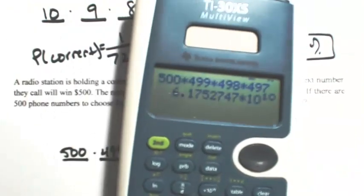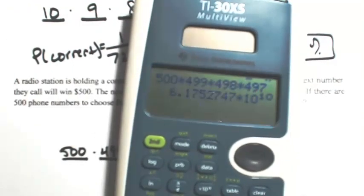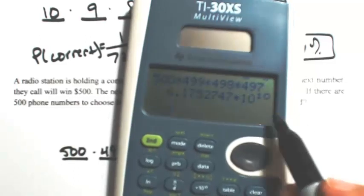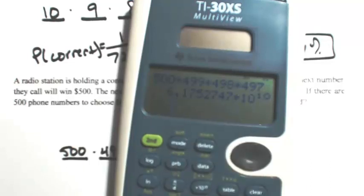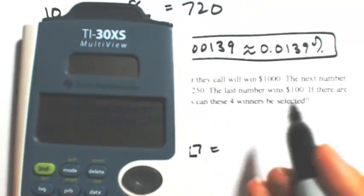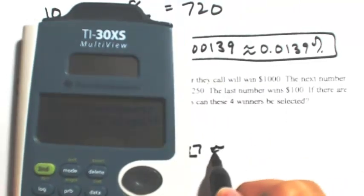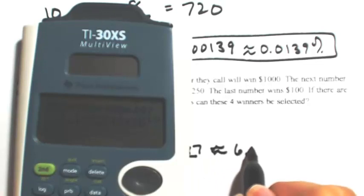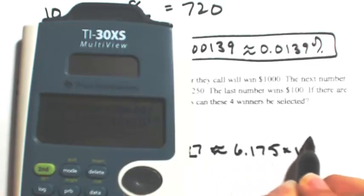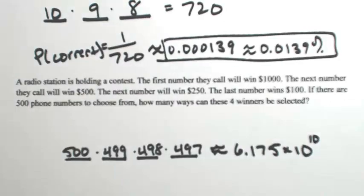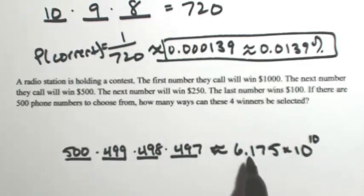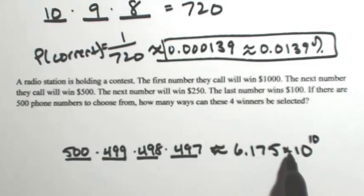The result is approximately 6.175 times 10 to the 10th power. That notation means the decimal moves 10 places to the right, so this is a very large number — about 61,750,000,000 ways.